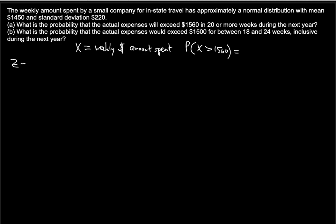We can use the Z variable in relation to X: Z = (X − μ) / σ, where μ is the mean amount spent per week and σ is the weekly standard deviation of $220. So we can write this as (X − μ) / σ = Z. When we subtract μ and divide by σ, we must do the same on the right side of the inequality: (1560 − μ) / σ.